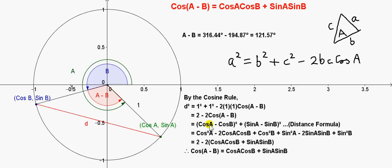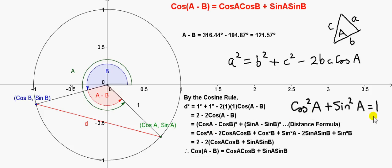Expanding the squares, we get cos²A − 2cosA·cosB + cos²B from the x-terms, and sin²A − 2sinA·sinB + sin²B from the y-terms. We then use the important identity that cos²θ + sin²θ = 1 for any angle θ. We have cos²A + sin²A, which gives 1, and cos²B + sin²B, which also gives 1. So those terms combine to give 2. We then factorize −2 out of the remaining terms, giving 2 − 2(cosA·cosB + sinA·sinB).